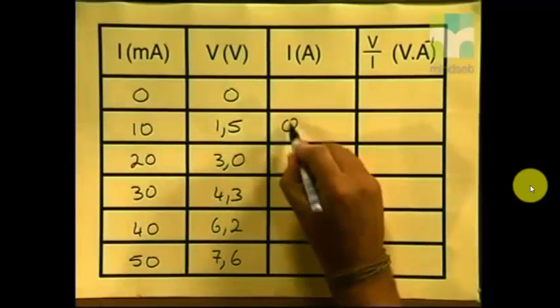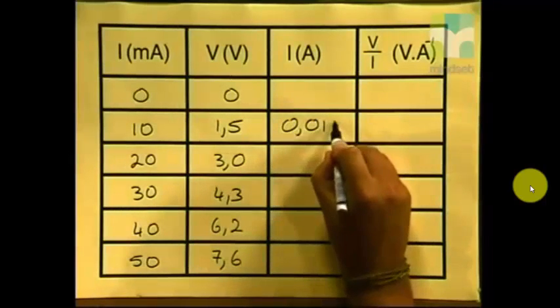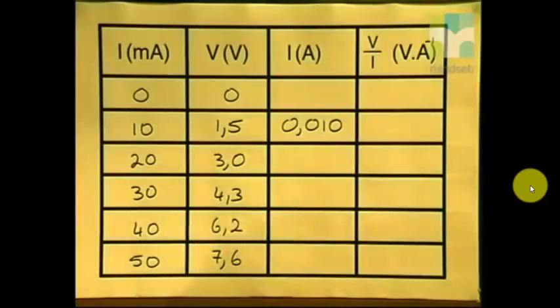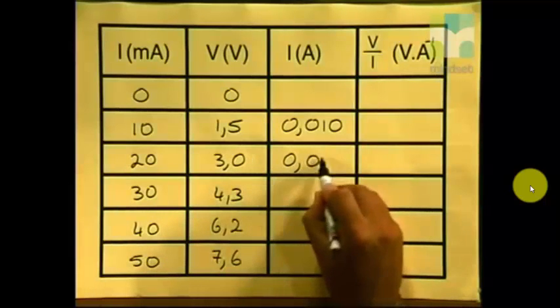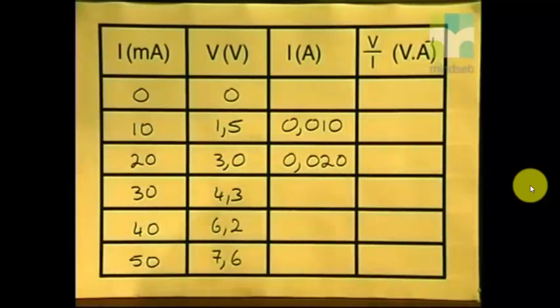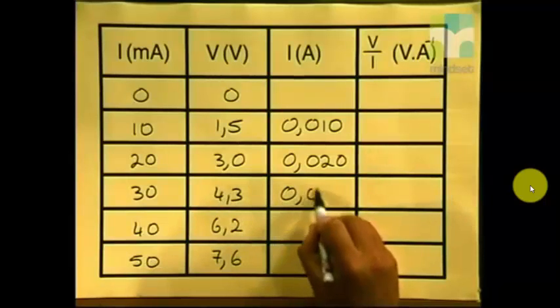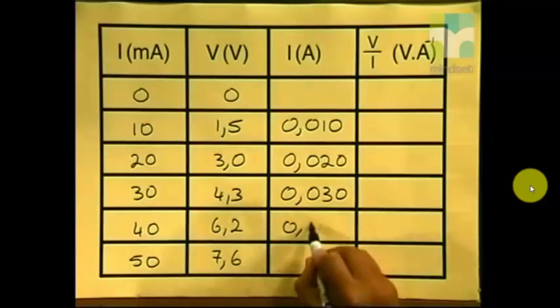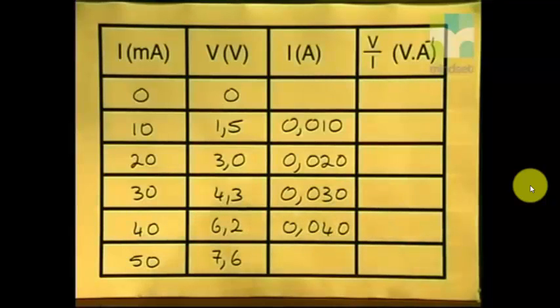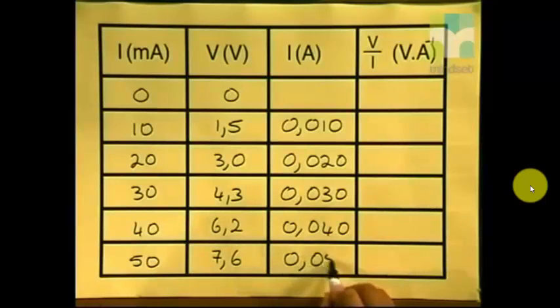Let's repeat that for all the rest. 20 milliampere gives me 0.020 amperes. The next one, 0.030 amperes. 0.040 amperes. And finally, 50 milliampere gives me 0.050 amperes.